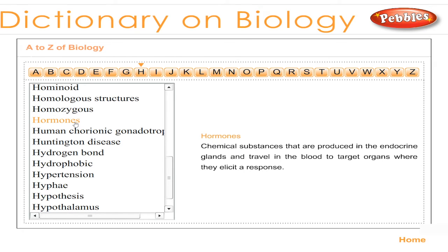Hormones: chemical substances that are produced in the endocrine glands and travel in the blood to target organs where they elicit a response.